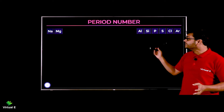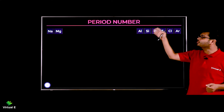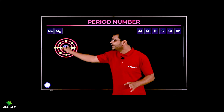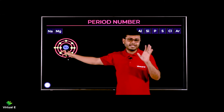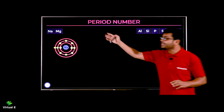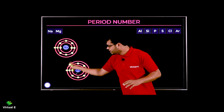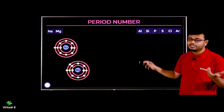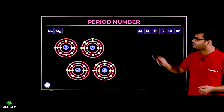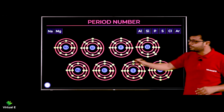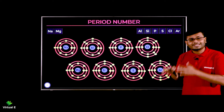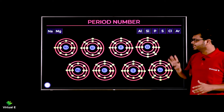Let's talk about the third period. Guess how many shells there should be. The elements are sodium, magnesium, aluminium, silicon, phosphorus, sulfur, chlorine, and argon. Sodium has 11 electrons — after filling two shells (10 electrons), one more electron needs a third shell. Similarly, each subsequent element adds one electron to the outer shell. From sodium to argon, all have three shells — third period.